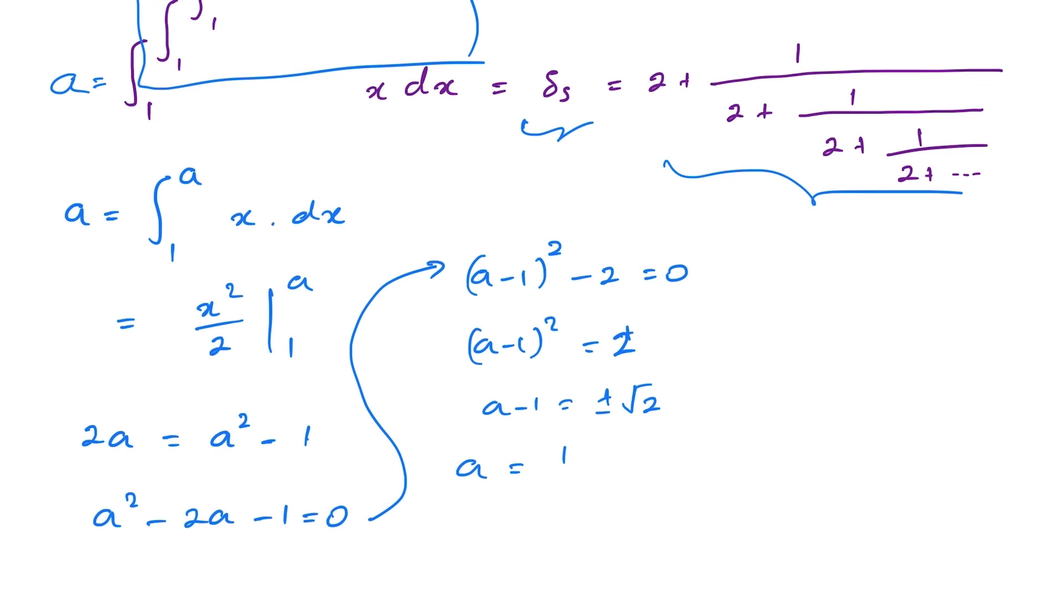So we have a = 1 + √2, which is equal to the silver ratio. You can convert this 1 + √2 to the continued fraction. Thank you for watching.